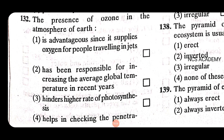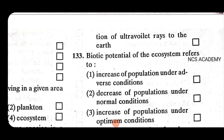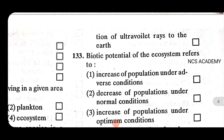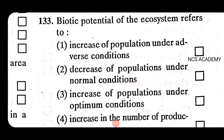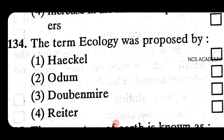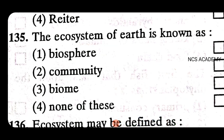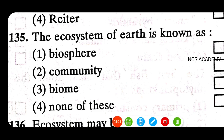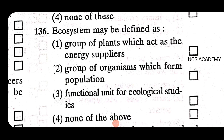The presence of ozone in the atmosphere helps in checking the penetration of ultraviolet rays to the earth — that is the right answer. Biotic potential of ecosystems refers to increase in self-population under optimum conditions. The term ecology was proposed by Reiter. The ecosystem of earth is known as the biosphere.